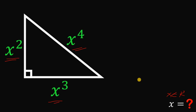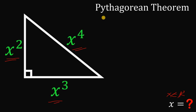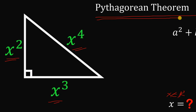To answer this question, we will use one theorem. Since we have a right triangle, we will use the Pythagorean theorem. The Pythagorean theorem states: a squared plus b squared equals c squared.